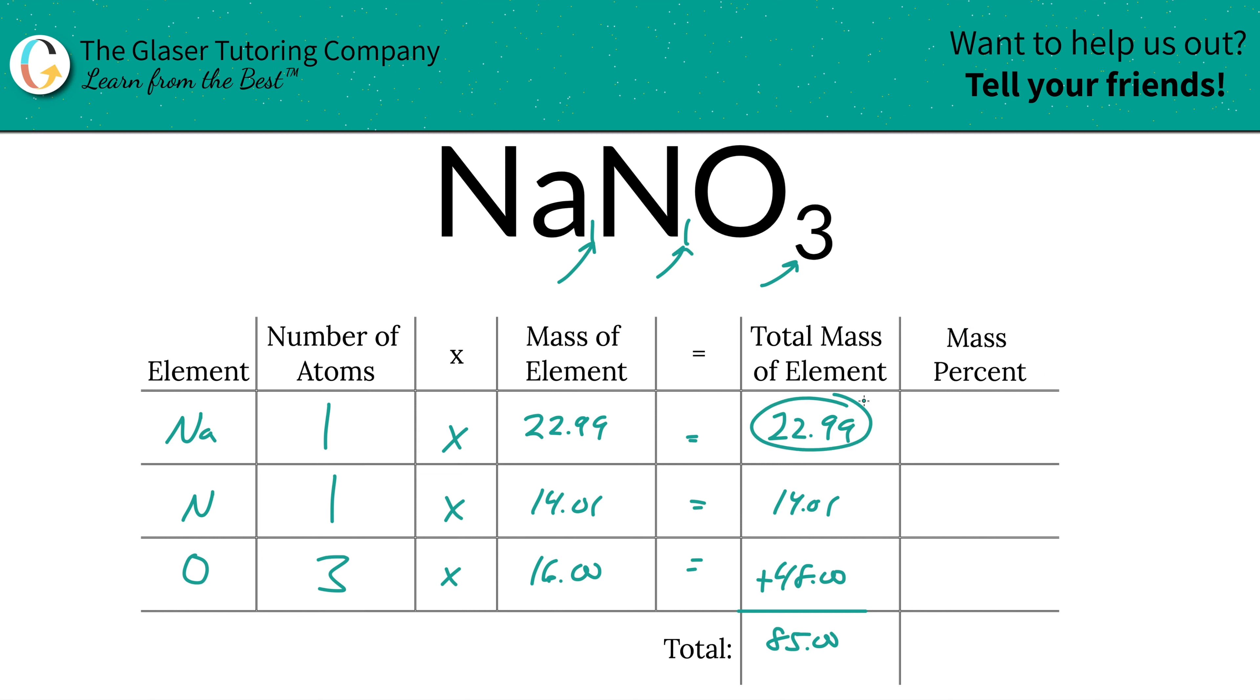To find the mass percent of sodium, we're going to take the total mass of sodium, 22.99, divide it by the total mass of the entire compound, 85.00, and then multiply that by 100.